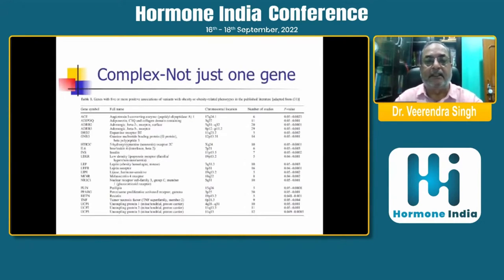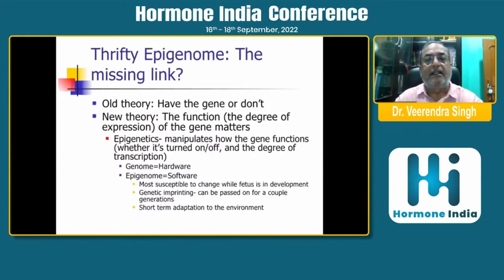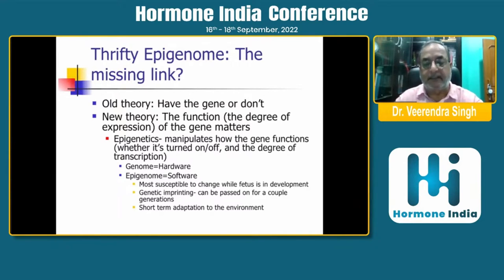Diabetes is not just one disease — many genes are involved. That is why the thrifty gene concept asks what is the missing link. The old theory was: either you have the genes or you don't. The new theory is that it is the function — the degree of expression of the gene that matters. Epigenetics manipulates how the gene functions, whether it is turned on or up and the degree of transcription. The genome is hardware, and the epigenome is the software.